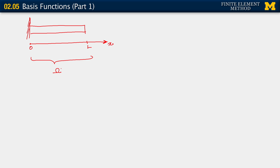Without those end points, what we did already is to partition this by the use of points that we are calling nodes. We've partitioned it into subdomains, each of which is denoted as omega e, indicating an element. The nodes that we have used are labeled x1, x2, and so on. In general, this would be the point xe and that would be the point xe plus 1. The point with x coordinate x equals L is node number N nodes.